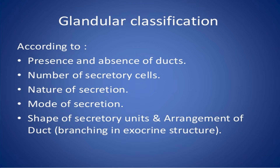The next classification is based on the number of secretory cells, and here we classify them into two types: unicellular or multicellular. Unicellular means a single cell is responsible for secretion — an example is the goblet cell, which secretes mucus. Multicellular glands involve groups of cells responsible for secretions. Examples include exocrine glands such as sebaceous glands or mammary glands, and endocrine glands such as the thyroid gland.